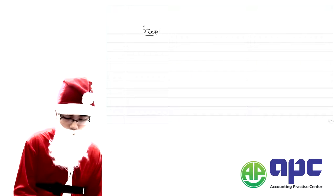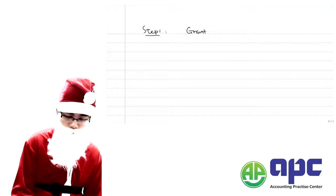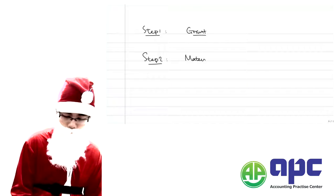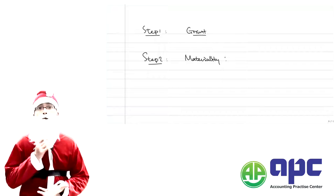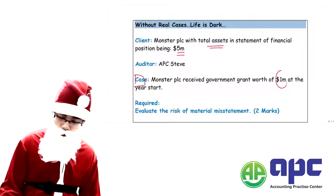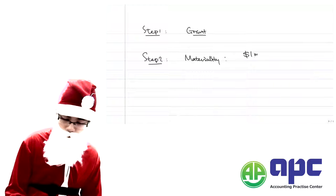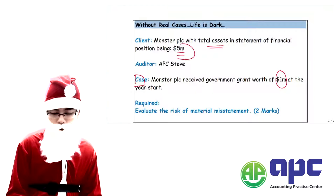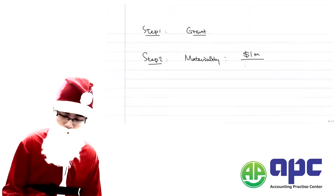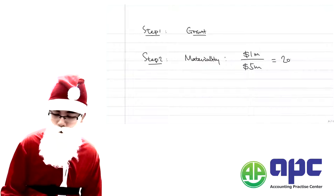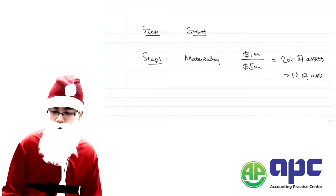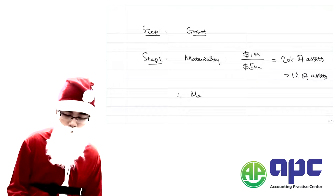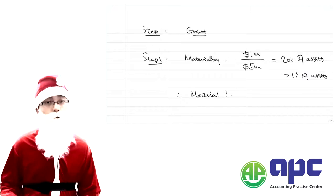Step one is to use the subheading called 'Grant' and underline it. Step two is the materiality calculation. Materiality here is related to the grant, which is $1 million. We divide by the total assets within the statement of financial position, worth $5 million. That gives 20% of total assets — surely that's more than 1%, so it is material to the SFP.